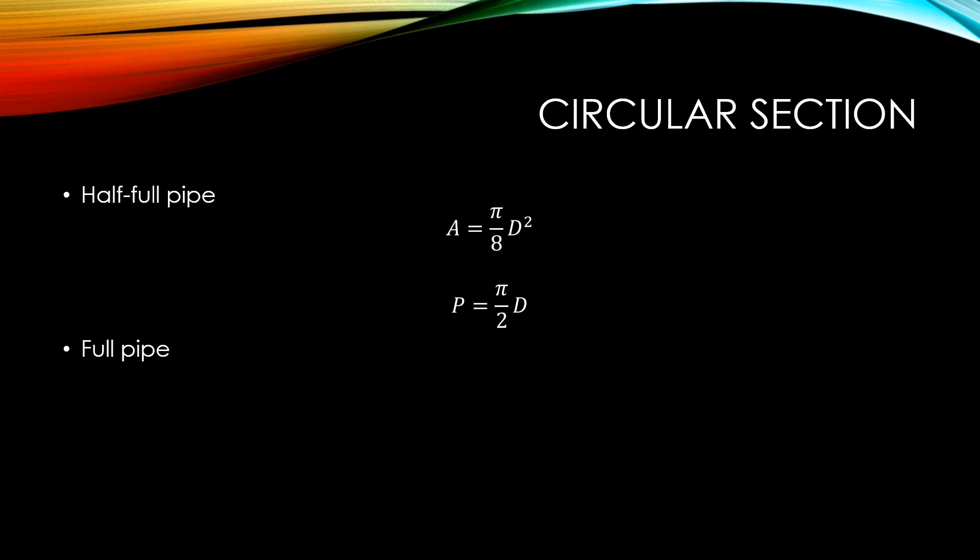For a completely full pipe, the area and the wetted perimeter are found by taking the equations for the area and circumference of a circle.